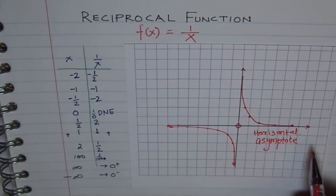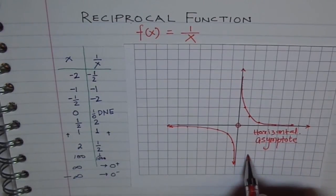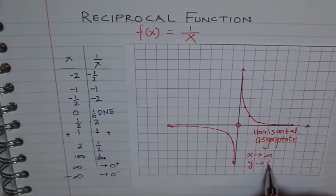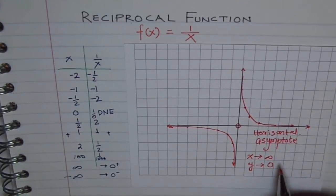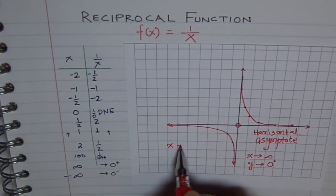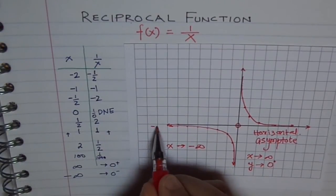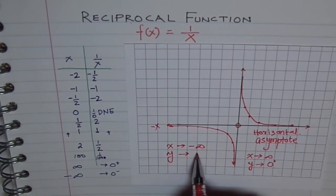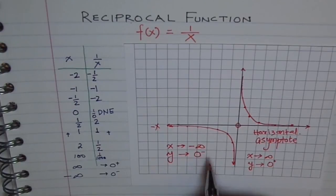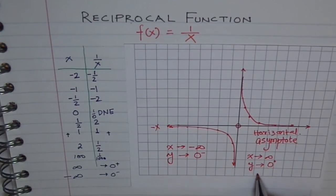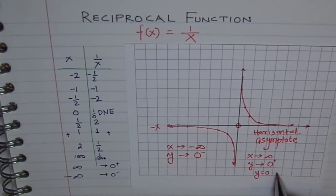This also gives us the end behavior. The end behavior is: as x approaches positive infinity, y approaches 0 from the positive side. As x approaches negative infinity — the negative side of the x-axis — y approaches 0 from the negative side. Both are approaching the line y equals 0. Therefore, we say y equals 0 is our horizontal asymptote.